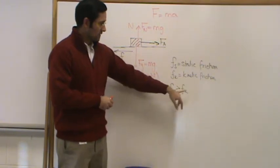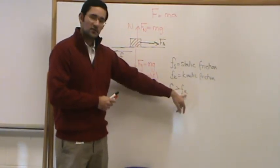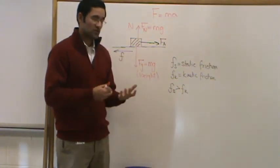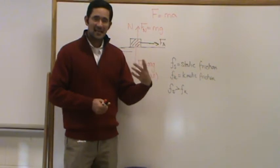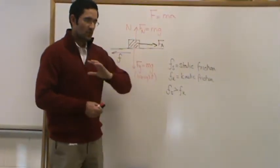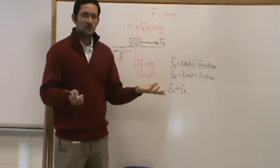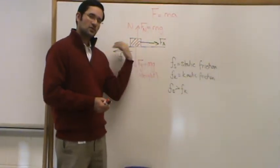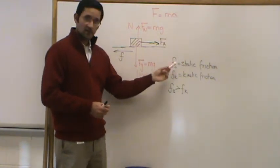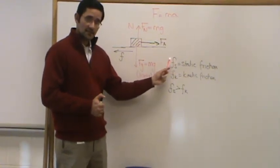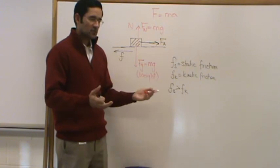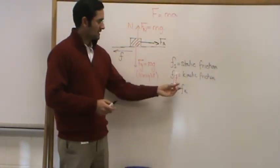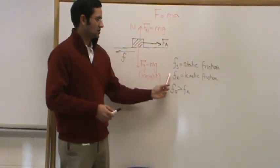Kinetic friction is weaker than static friction. The reason goes back to Newton's first law: an object at rest prefers to stay at rest, and an object in motion prefers to stay in motion. So it is tougher to move an object at rest than it is to keep an object moving. Remember, friction is a reactionary force — if there is no applied force, there is no friction. Once you start pulling one way, friction fights in the opposite direction.